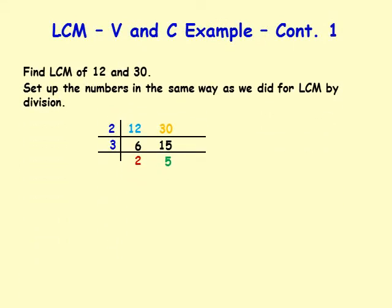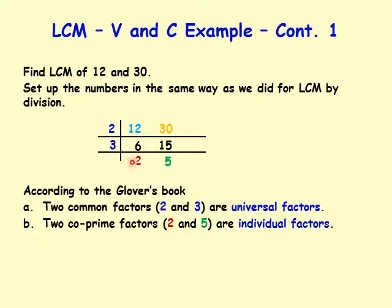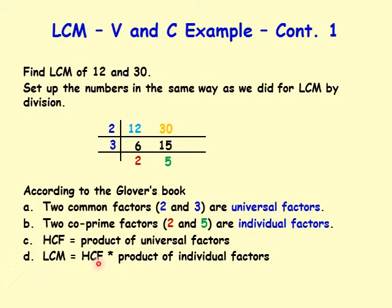After dividing by common factors, 2 and 3 are common factors, and 2 and 5 are the relatively prime numbers left. According to Glover's book, the two common factors 2 and 3 are universal factors, and the co-prime factors 2 and 5 are individual factors. HCF is the product of universal factors. LCM is the product of universal factors and individual factors, which is the product of HCF times the product of individual factors. The sutra used is individual and universal.